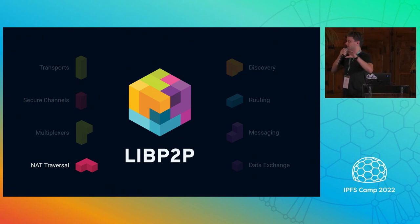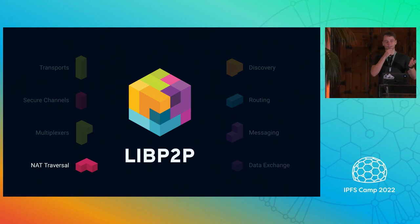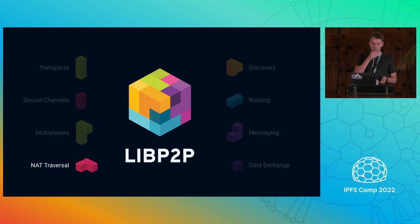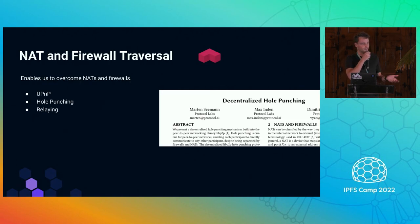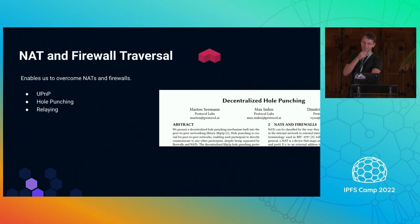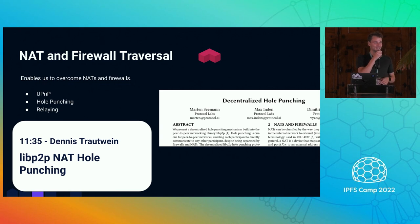Next up is NAT traversal. In peer-to-peer networks, the biggest pain point is probably firewalls and NATs. You can assume pretty much every laptop is running behind NATs and firewalls — every browser for sure. libp2p has different mechanisms for that: UPnP for automatic port forwarding, a hole punching mechanism, and relaying. We have a whole talk on this by Dennis, who'll walk us through NAT hole punching and show some cool data.